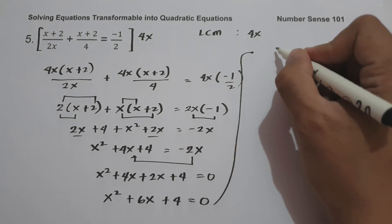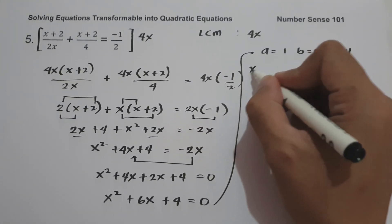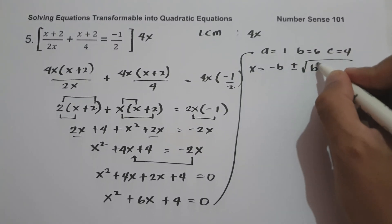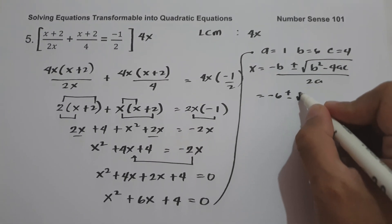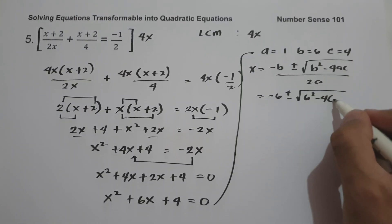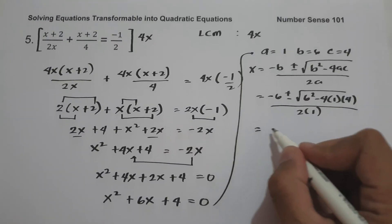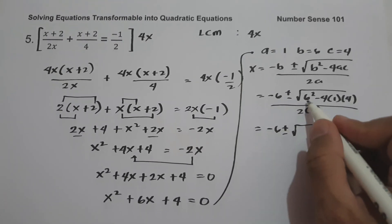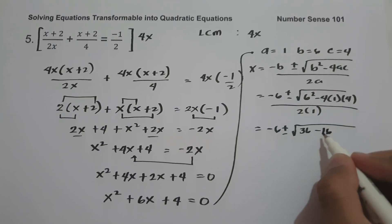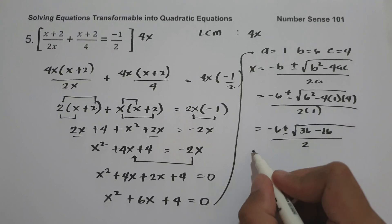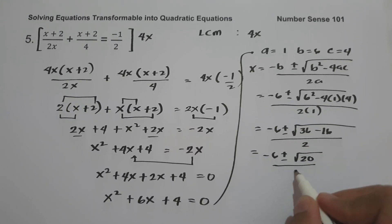The values are a equals 1, b equals 6, and c equals 4. The quadratic formula is negative b plus or minus the square root of b squared minus 4ac, all over 2a. Substituting: negative 6 plus or minus the square root of 6 squared minus 4 times 1 times 4, all over 2 times 1. This gives negative 6 plus or minus the square root of 36 minus 16 over 2, which is negative 6 plus or minus the square root of 20 over 2.